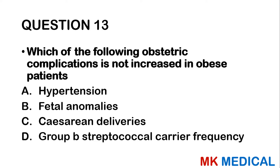Question 49: Aspermia is the term used to describe: A — absence of sperm or absence of semen. B — absence of sperm and ejaculate. C — absence of sperm motility. D — occurrence of abnormal sperm. E — low sperm count. 'A' means without; 'spermia' refers to sperm and ejaculate. Aspermia means absence of both sperm and ejaculate. Note that oligozoospermia refers to a reduced sperm count of less than 15 million in the ejaculate. The answer is B.